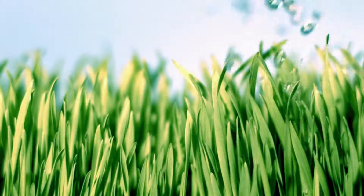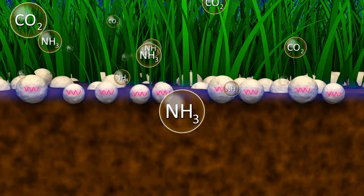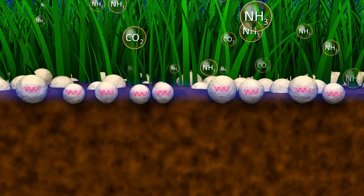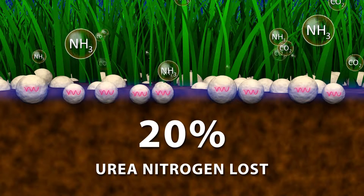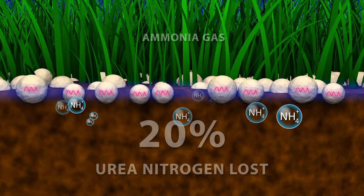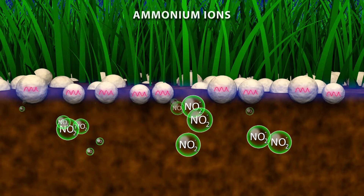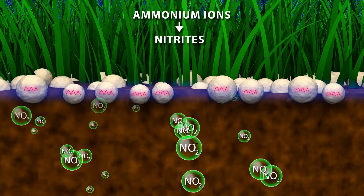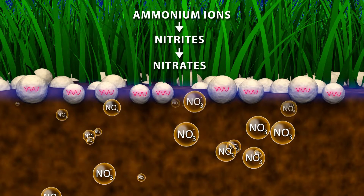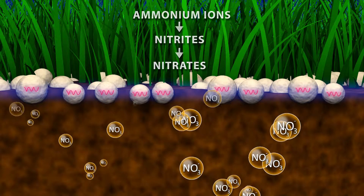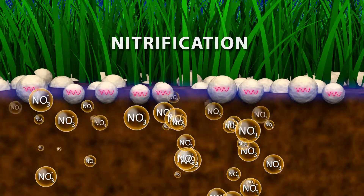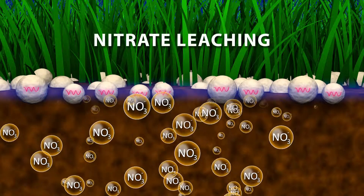Under the right conditions, dissolved ammonium ions become volatile and are released into the atmosphere. As much as 20% of applied urea nitrogen can be lost in the form of ammonia gas. Once hydrolyzed, ammonium ions are oxidized to nitrites, and the nitrites are further oxidized to highly mobile soil nitrates through the bacterial-mediated process of nitrification. A high rate of nitrification may cause further nitrogen losses through nitrate leaching.